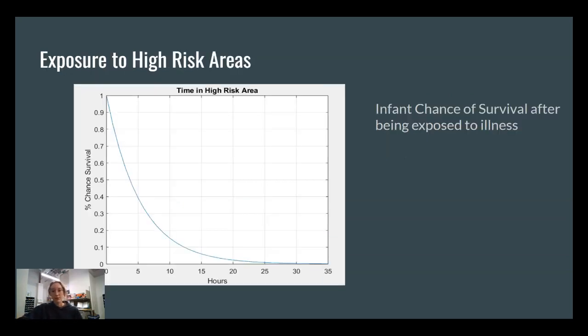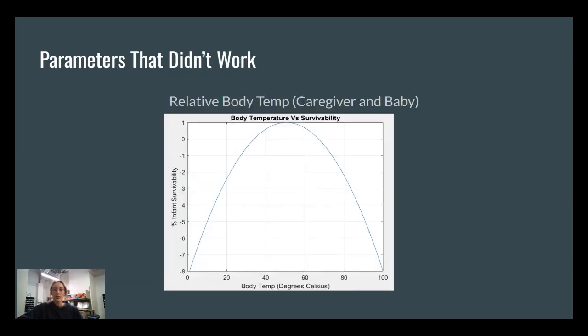So our next parameter is exposure to high-risk areas. This includes the baby being exposed to infection or illness or disease. And you can see that zero exposure, we automatically assume that the baby has a 100% survival chance. So this is a parameter that we couldn't figure out how to incorporate into our ODEs. This is body temperature versus survivability. And we found that the regular body temperature of a mother is 37 degrees Celsius. And we kind of just assumed that that would be applicable to the baby as well. But we couldn't necessarily incorporate this into our weight ODE. And we couldn't incorporate this into our survivability ODE based on the parameters we wanted to look at. So we ended up dropping it.